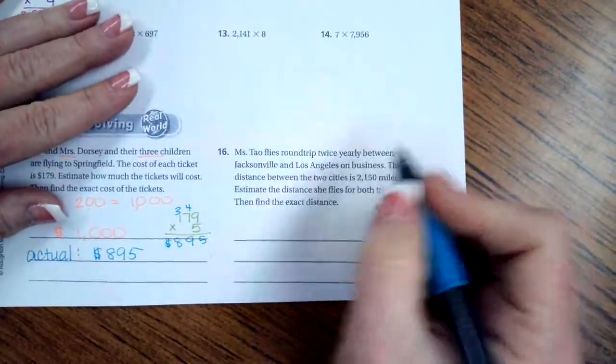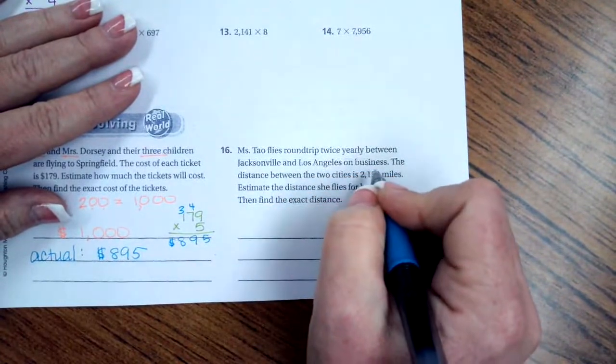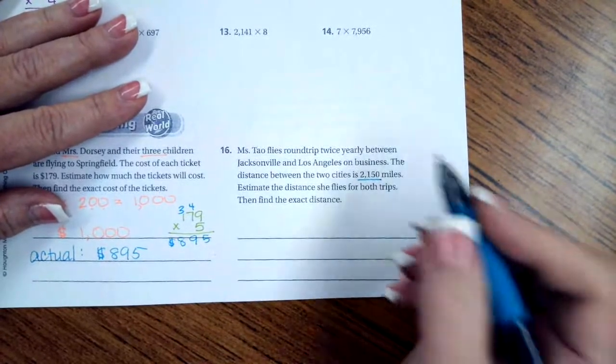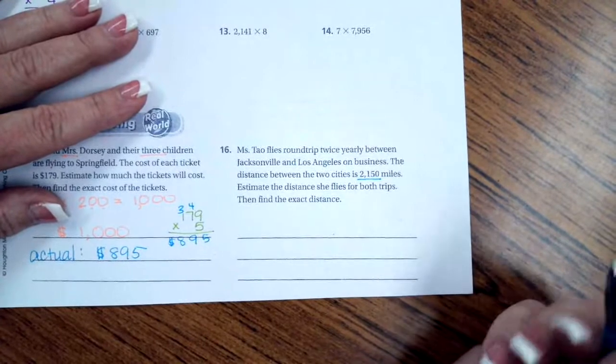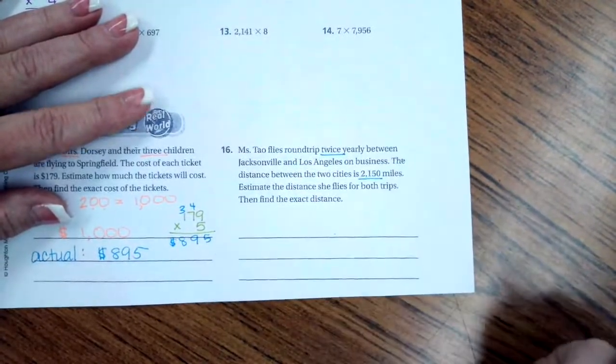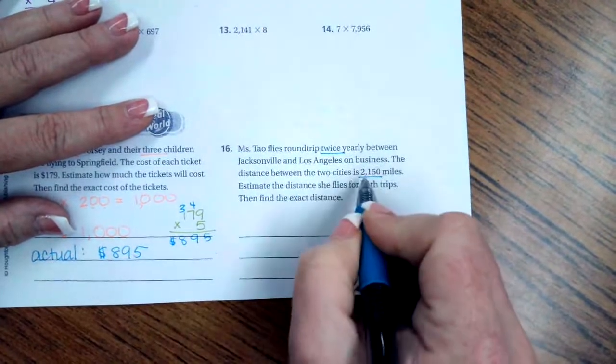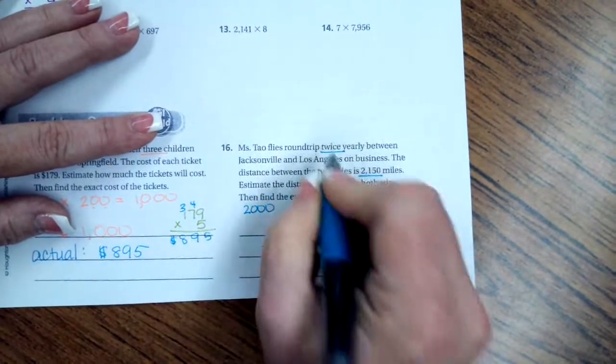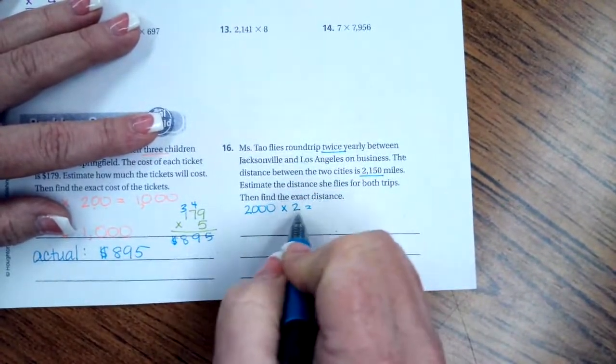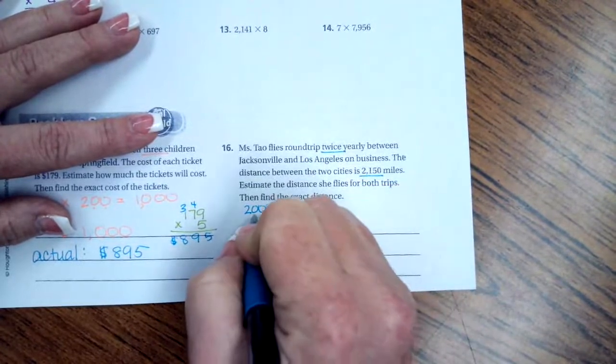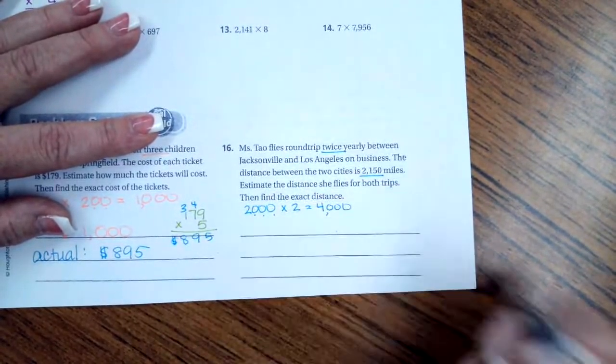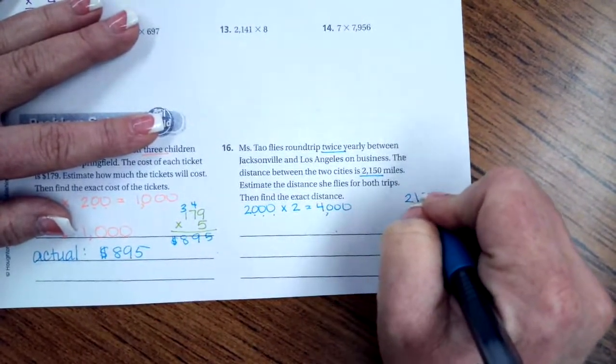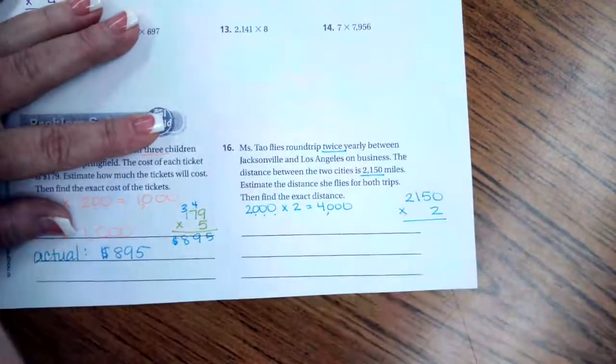Mrs. Tau flies round trip twice yearly between Jacksonville and Los Angeles on business. The distance between the two cities is 2,150 miles. Estimate the distance she flies for both trips, then find the exact distance afterwards. So twice yearly - we need to do, if we rounded this number it would be to about 2,000 and she does it twice yearly. Well two times two is four and then I have one, two, three zeros, so estimate is about 4,000.